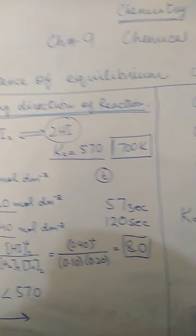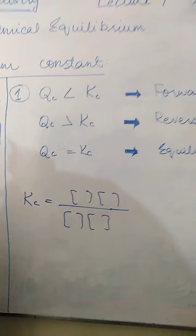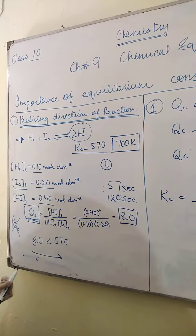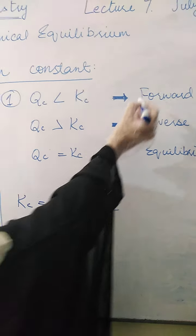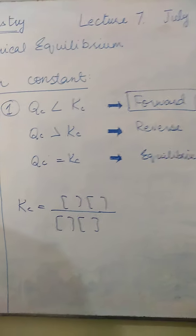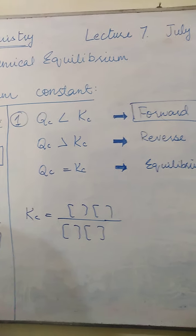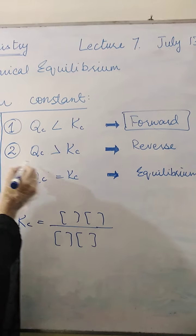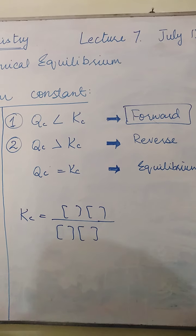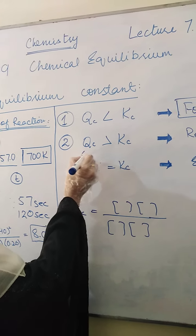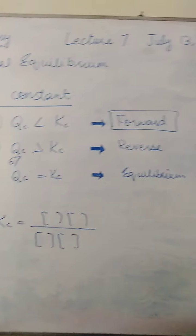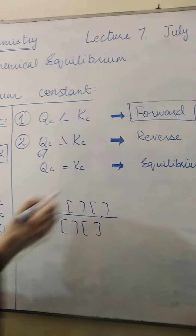We have three conditions. First condition: when the value of Qc is smaller than Kc — for example, Qc was 8 which is very small compared to Kc of 57 — the reaction will move in the forward direction. It needs to go from 8 toward 57 to reach equilibrium. Second condition: when Qc is greater than Kc — suppose Qc was 67 while Kc is 57 — then the reaction will move in the reverse direction, because it needs to come down from 67 to 57.